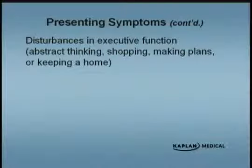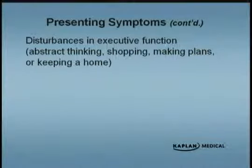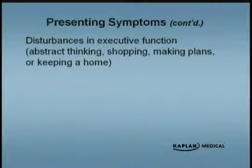These patients also have problems with executive functioning, which tends to be the most debilitating. These are the patients that have problems with abstract thinking, problems with shopping, and problems making any kind of plans or keeping a home. That's why patients who have dementia, when it gets severe enough, can burn the house down or get lost very easily — which is why a lot of them end up in a nursing home for their own safety.